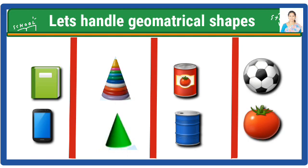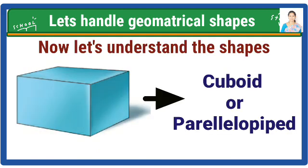Now we have got four groups of similar shapes. Now let's understand the shapes.